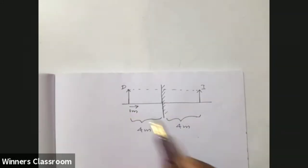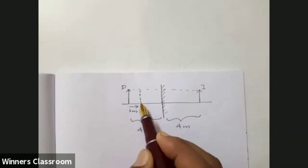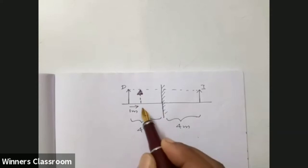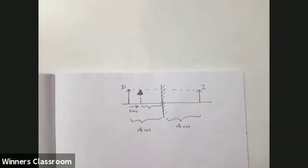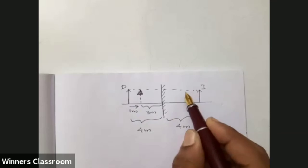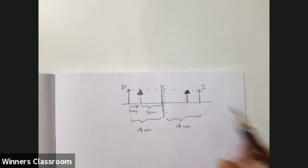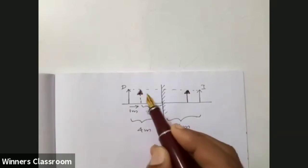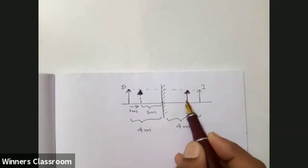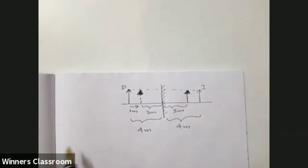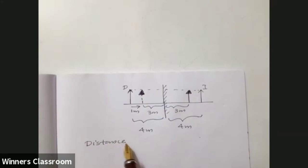If he moves 1 meter towards the mirror, the image will also move towards the mirror. This is how much distance from the mirror — when he moves 1 meter, the new distance is 3 meters. So the total distance between David and his image is 3 plus 3 equals 6 meters.